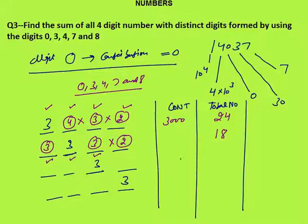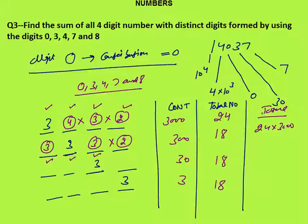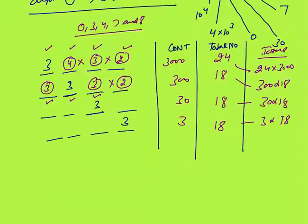So total contribution of digit 3: at thousands place it is 24 × 3000; at hundreds place it is 18 × 300; at tens place it is 18 × 30; at units place it is 18 × 3. Total = 24 × 3000 + 18 × (300 + 30 + 3) = 24 × 3000 + 18 × 333.